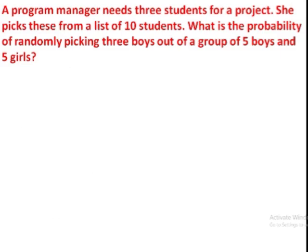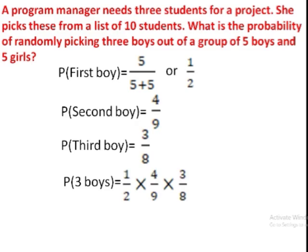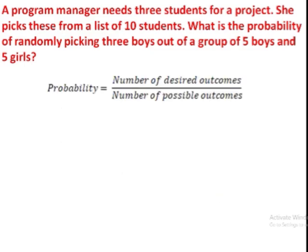A program manager needs three students for a project. She picks these from a list of ten students. What's the probability of randomly picking three boys out of a group of five boys and five girls? The probability of picking the first boy is 5 out of 10, one on two. When we are picking the second boy, there are four left out of nine students. The probability of picking the third boy is three out of eight. The probability of picking all of them together is these three probabilities multiplied, which gives you one on twelve.